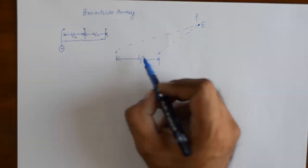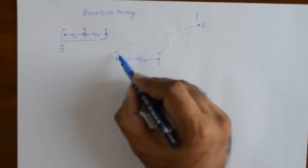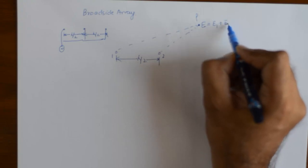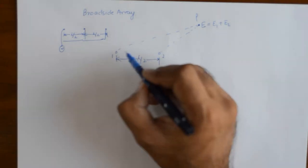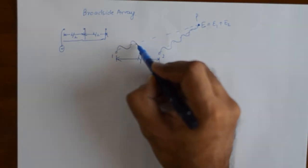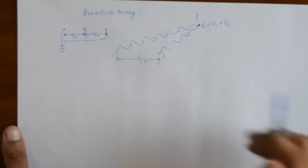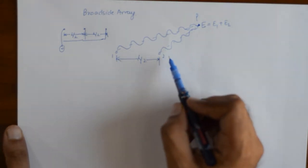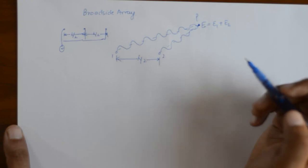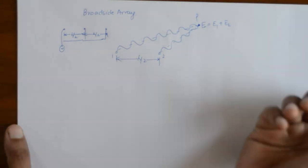The electric field intensity at point P, due to the presence of two elements one and two, is going to be E1 plus E2. There is going to be some phase difference because the distances traveled by the electric field from element one and two are different — element one travels more distance compared to element two to deliver its energy to point P, which results in some phase difference.